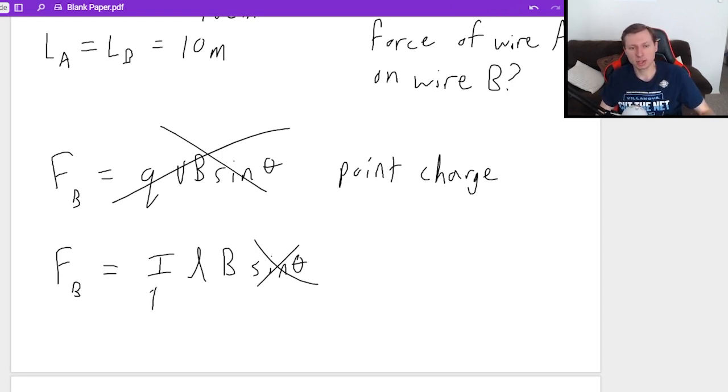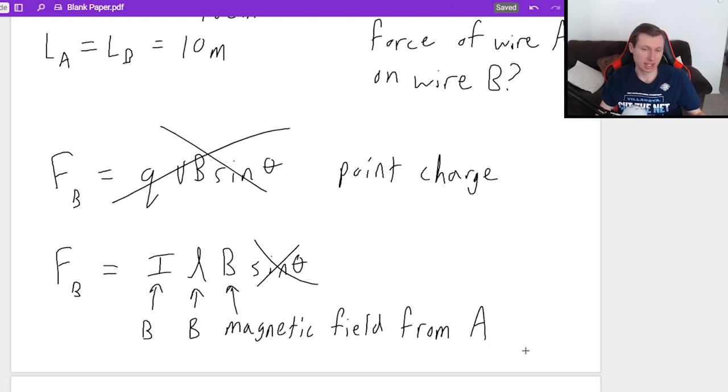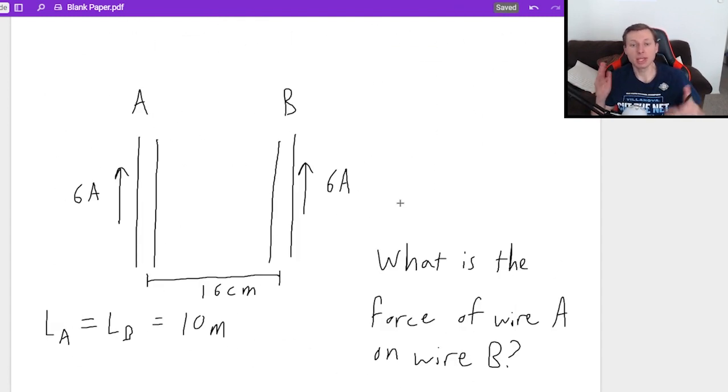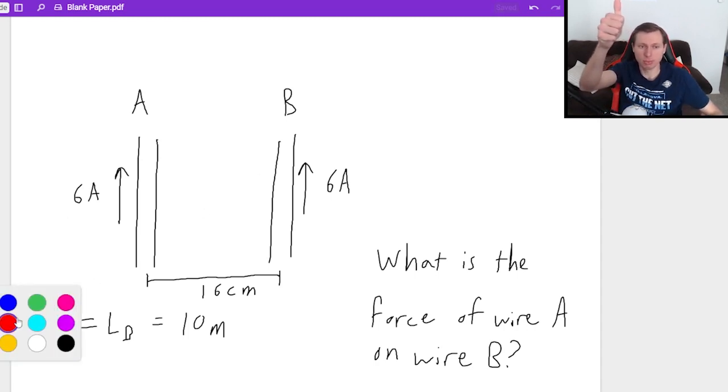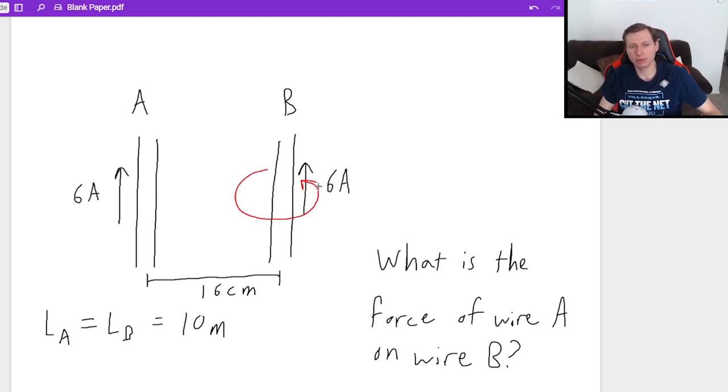So I is the current in wire B, L is the length of wire B, but this is the magnetic field from wire A. And the reason why is because, yes, wire B is creating a magnetic field. If you wanted to find the direction, your thumb would point in the direction of current, you'd curl your fingers to see which way the field points, it would point around like this. So in other words, yes, wire B is creating its own magnetic field.